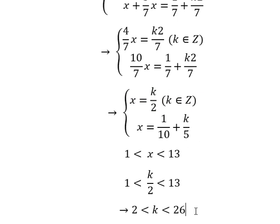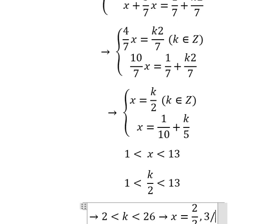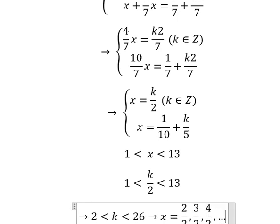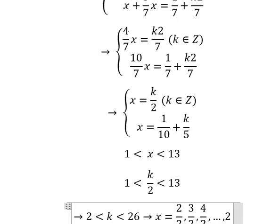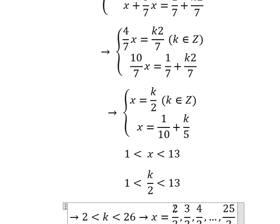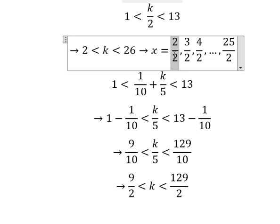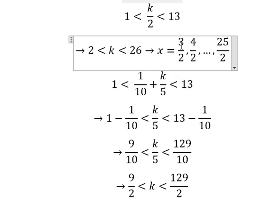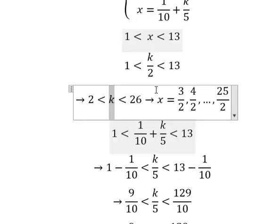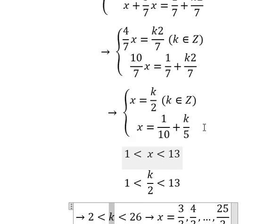In this situation we can get x equals to number 2 over 2, 3 over 2, 4 over 2, and so on until 25 over 2. We cannot allow number 2 here because k cannot equal to number 2. So we just start from number 3 to number 25 for k here, because we have k over number 2.